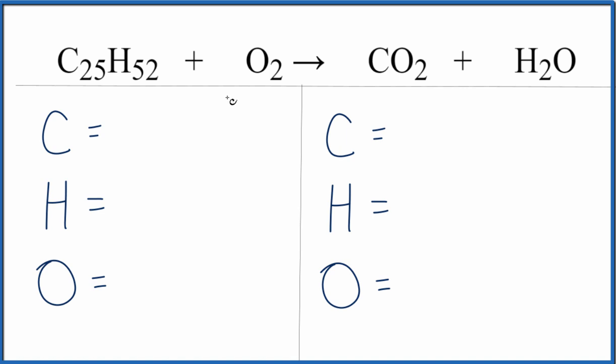Let's add the atoms up on each side and balance this equation. We have 25 carbon atoms, we have 52 hydrogen atoms, and then 2 oxygen atoms.